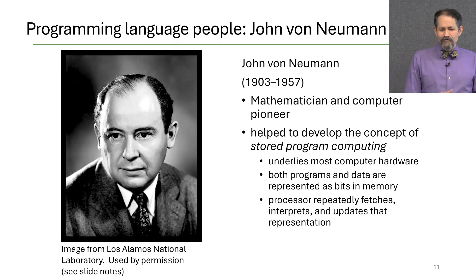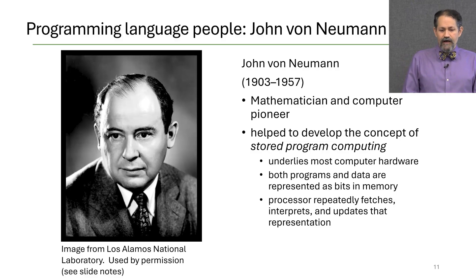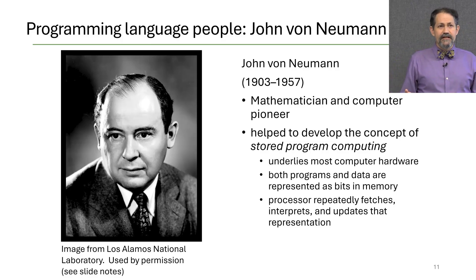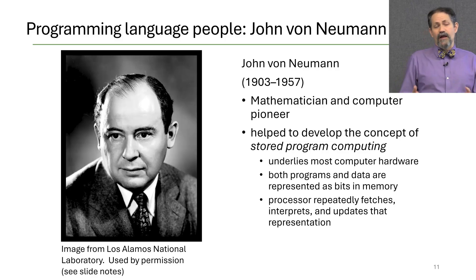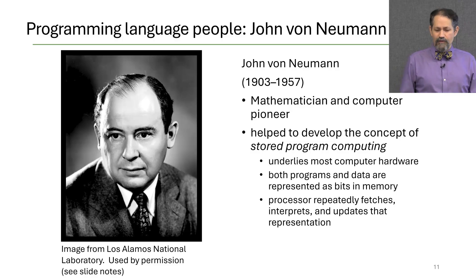Where did the von Neumann language name come from? John von Neumann was a mathematician and computer pioneer who helped develop the concept of stored program computing — the model underlying most computer hardware today. In this model, both programs and data are represented as bits in memory, and the processor generically fetches, interprets, and updates that representation.